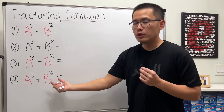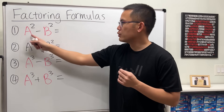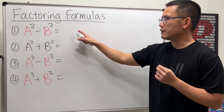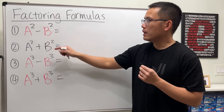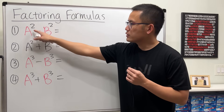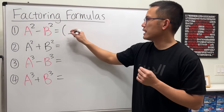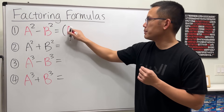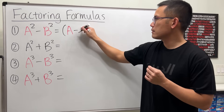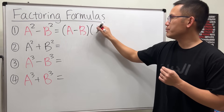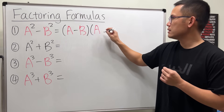Notice we have two terms. Starting with the first one: a squared minus b squared. We will get a minus b times a plus b.